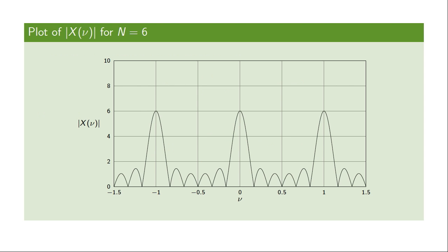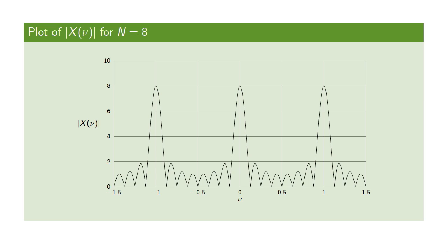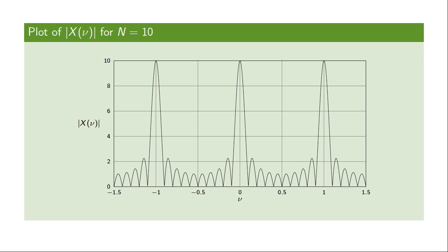To get an understanding of what this looks like, let's see a plot of the absolute value of the transform for the case N=6. You can clearly see that the transform is periodic as expected. It consists of several lobes: one main lobe around the integer frequencies, and the maximum value of the transform equals N, which is 6 in this case, plus several side lobes. Increasing the length from N=6 to N=8, we see the transform increases. As we make signals longer in time, the Fourier transform becomes less broad. Increasing the length to 10 further illustrates this behavior.